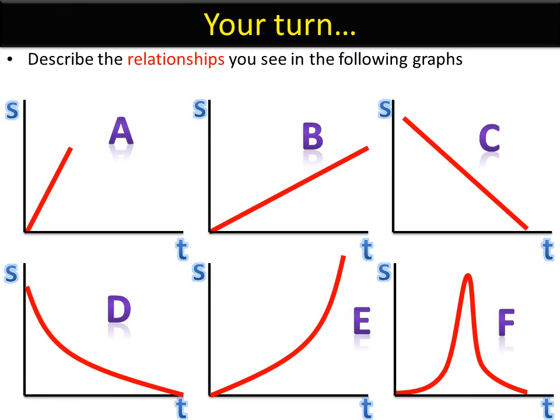D is decreasing at a decreasing rate. So the gradient is tending towards zero. It looks like it would eventually level out there. E is increasing at an increasing rate.